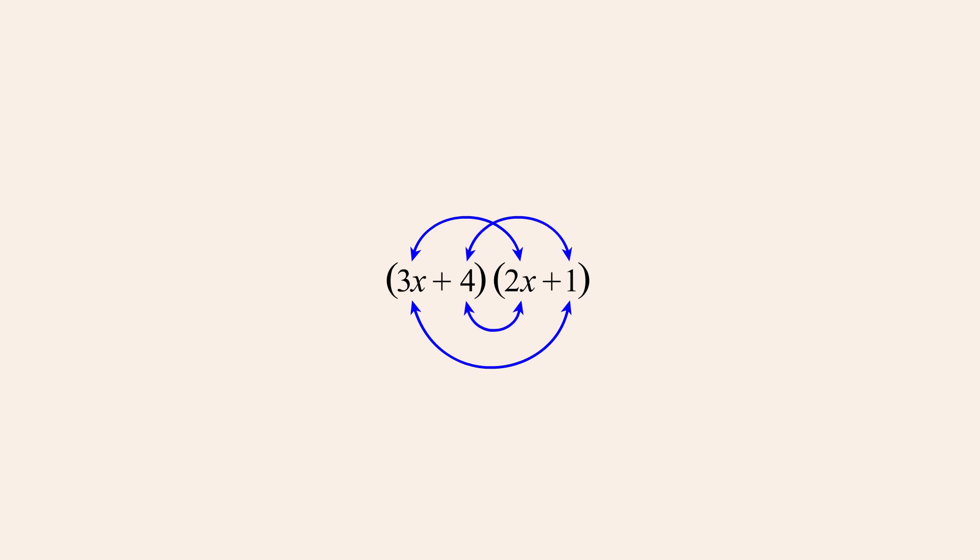However, it is not necessary to multiply the terms in that particular order, as long as each term in the first expression is multiplied by each term in the second expression. This is true for any two polynomial expressions regardless of the number of terms in either expression.